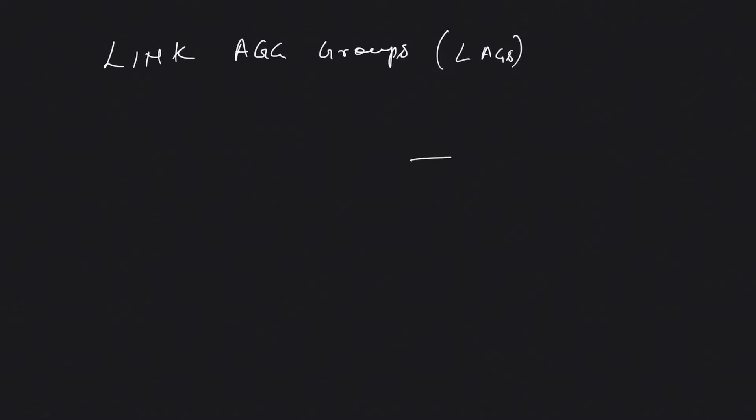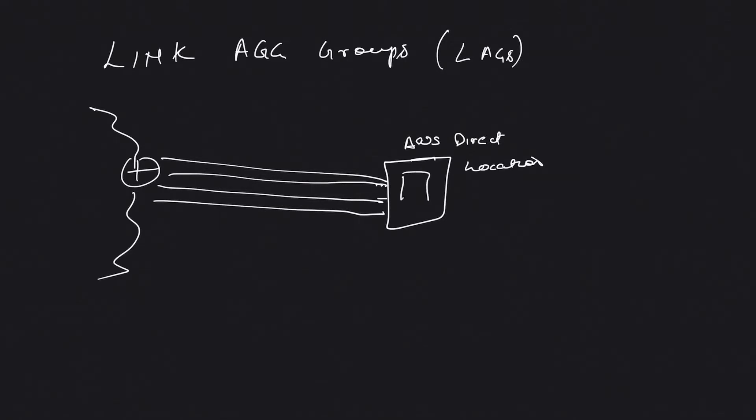Suppose this is your AWS Direct Connect location, and this is your AWS cloud. You have, say, four connections going from this location and this device to your AWS. What you can do using LACP is bundle these up, and they'll be treated as a single connection.